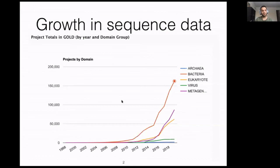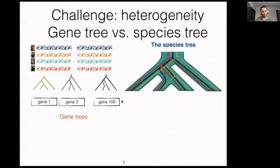This growth provides both opportunities and also challenges. As an opportunity, we hope that we could infer the evolutionary relationship between different organisms. But the first challenge is that with this huge amount of data, how could we model the evolution and infer the phylogenies or infer the evolutionary relationships?